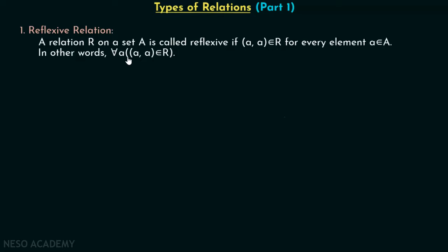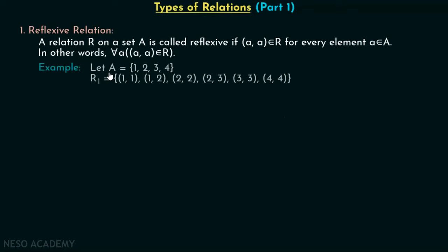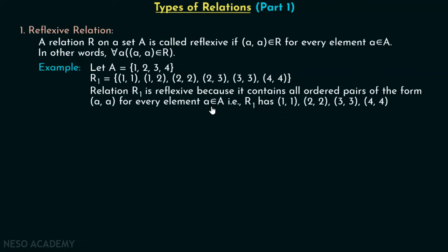In other words, for all A, (A, A) must belong to R. Let's discuss one example. Let's say A is a set which consists of these elements, and we have relation R1 which consists of ordered pairs: (1,1), (1,2), (2,2), (2,3), (3,3), (4,4).